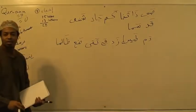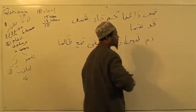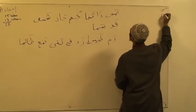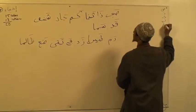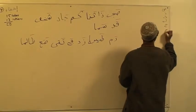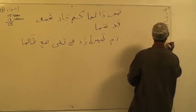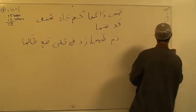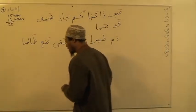Now we're going to give an example of each one. The fifteen letters of Ikhfa are: Sa'd, Thal, Tha, Kaf, Jim, Sheen, Qaf, Sin, Dal, Ta, Zay, Tha, Ta, Dad, and Dha — fifteen letters. Let's go through each one and get an example.